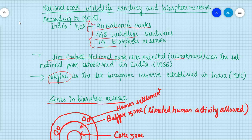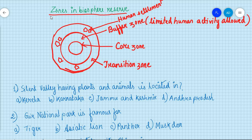Biosphere reserves have many zones — mainly three zones. The innermost part is the core zone, then the buffer zone, and the outermost part is known as the transition zone. In the transition zone, human activities and human settlements are allowed. In the buffer zone, only limited human activities are allowed, such as research visits. In the core zone, human activities are strictly prohibited — no one can go there.